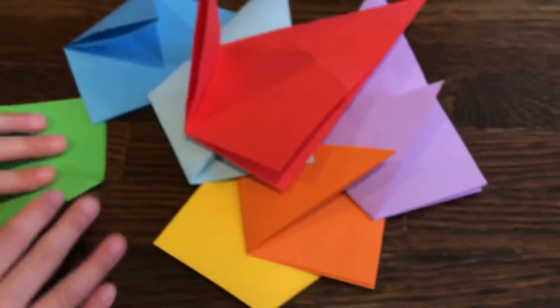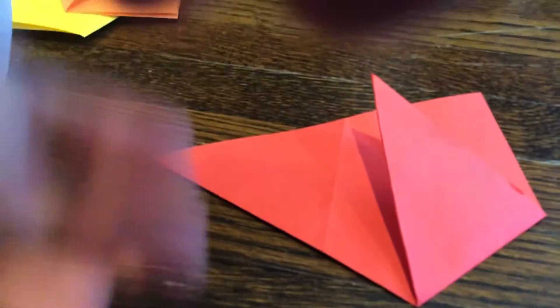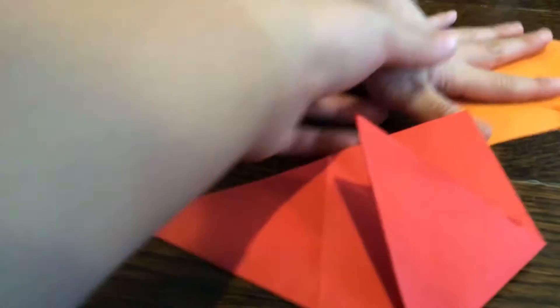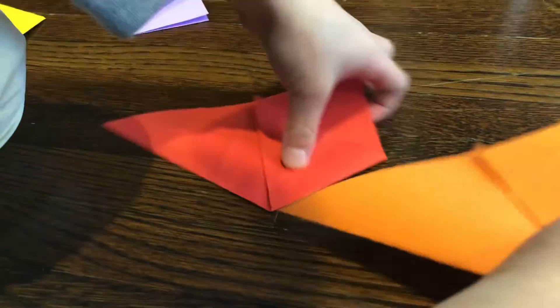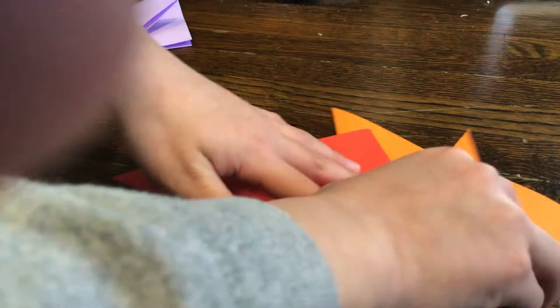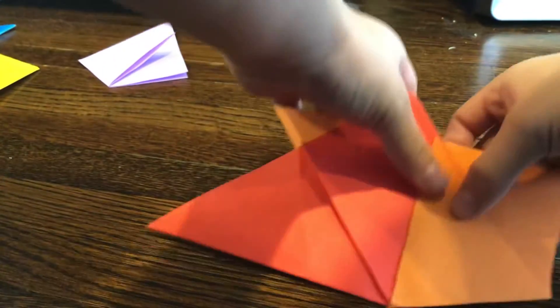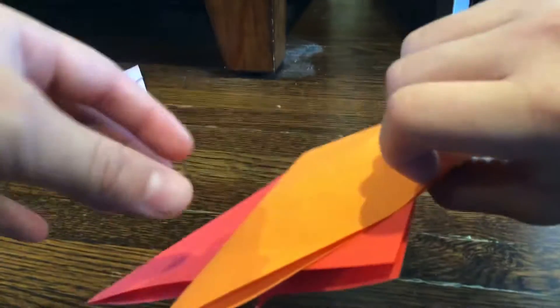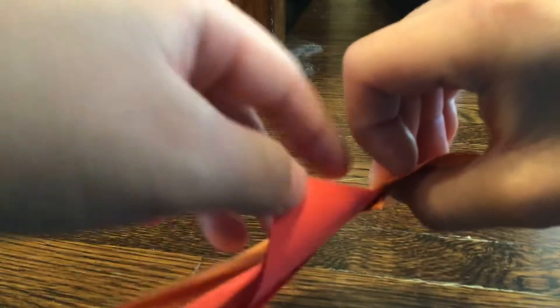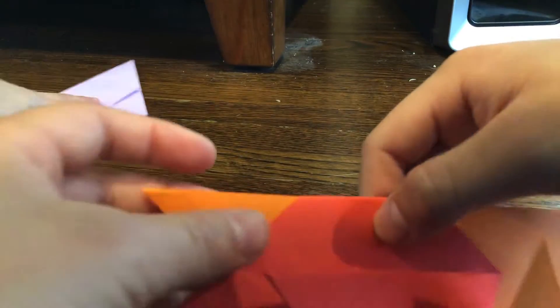So you have all those. Then first take your red one and then take another one which is orange. Hold the orange one like this and then put this inside right here. Then take this corner and bend it down, fold it.